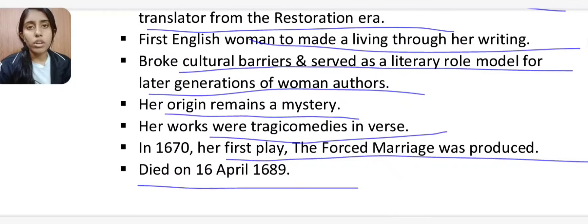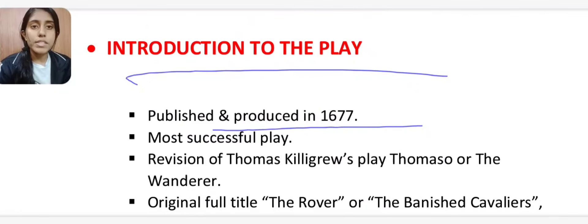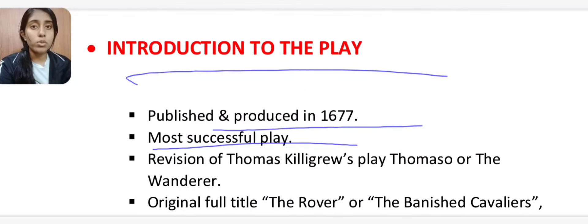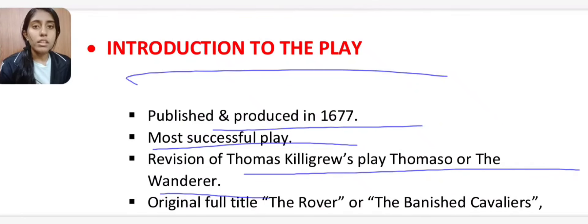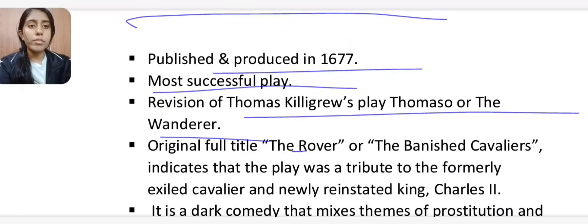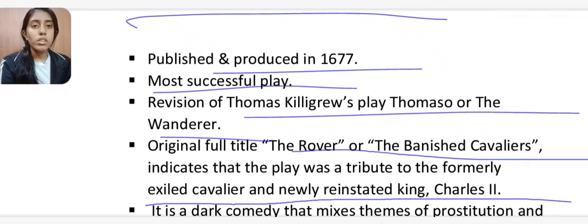The Rover was published and produced in 1677 and is Aphra Behn's most successful play. It is a revision of Thomas Killigrew's play Thomaso, or The Wanderer. Its full original title is The Rover and the Banished Cavalier, indicating it was a tribute to the formerly exiled cavalier and newly reinstated King Charles II.